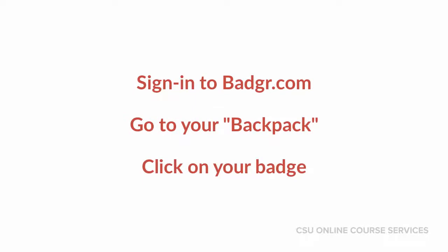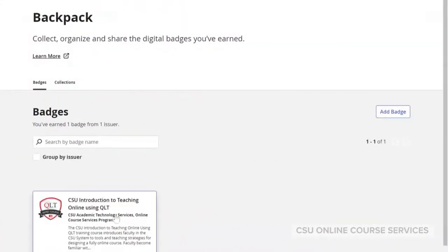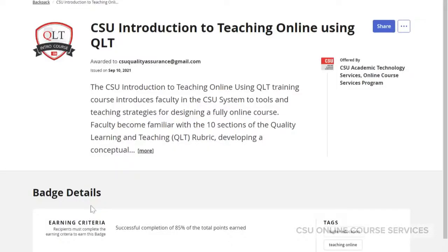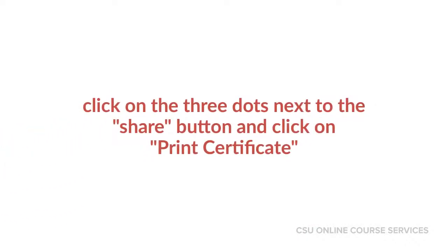Sign in to Badger, go to your backpack, and click on your badge. To print your certificate, click on the three dots next to the Share button and click on Print Certificate.